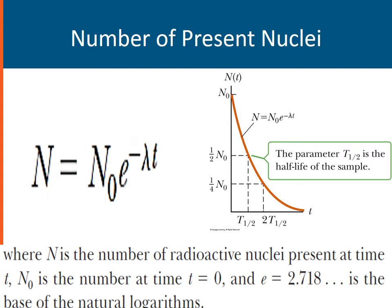It was experimentally observed that the number of nuclei present decays exponentially over time, and it is governed by this equation. We have N equals N sub 0, E raised to the power of negative lambda T, where N is the number of radioactive nuclei present at a specific time T, and N sub 0 is the initial number of nuclei. E is 2.718, the base of natural logarithms, and lambda is the decay constant.